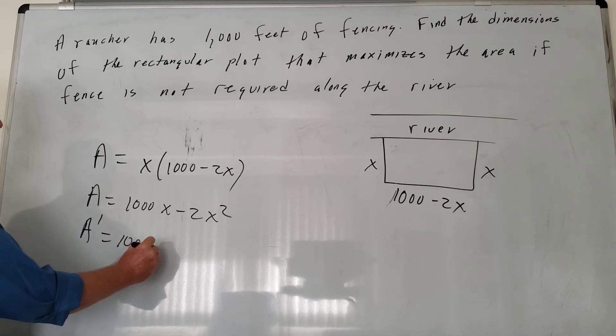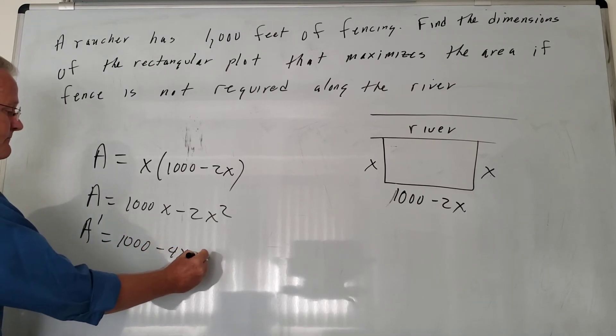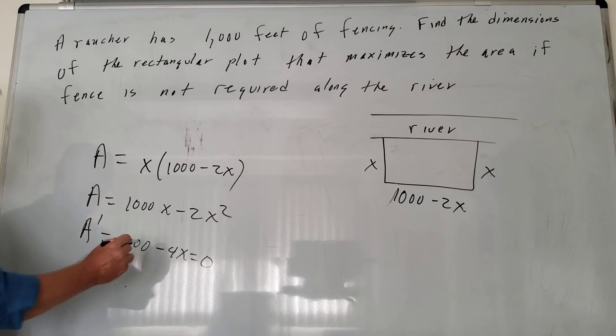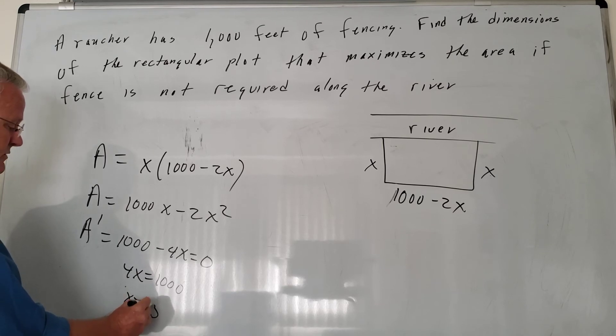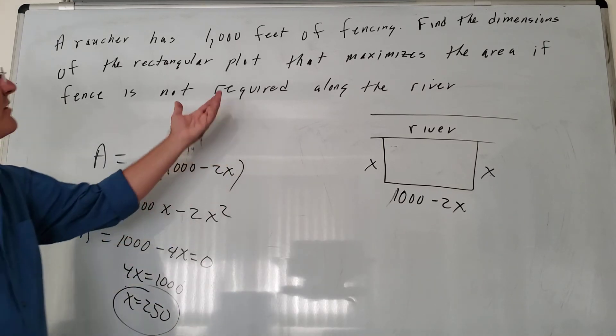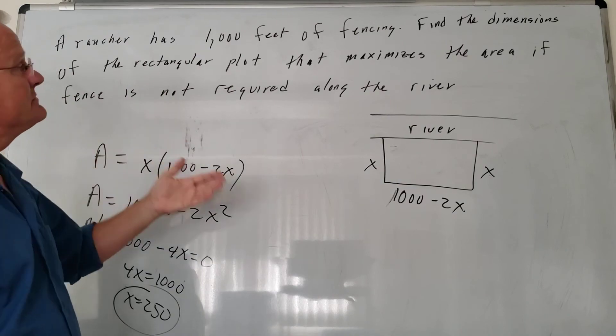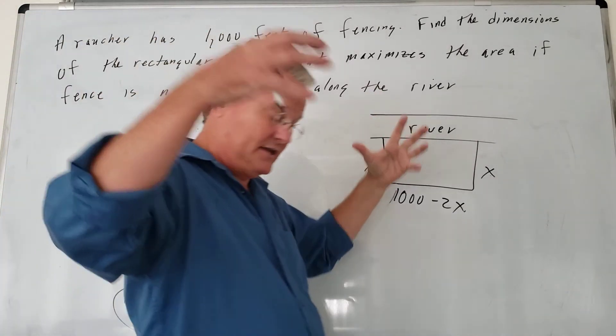The derivative of the area is 1,000 minus 4X. Set that to 0. Adding 4X to both sides, we get 4X equals 1,000. Divide by 4 and we get 250. So what are the actual dimensions?